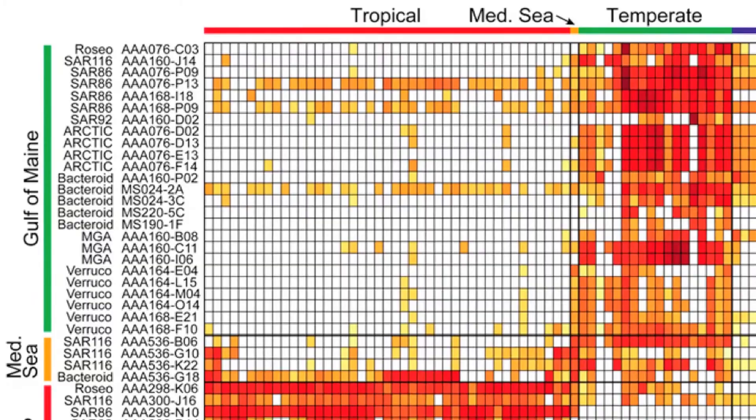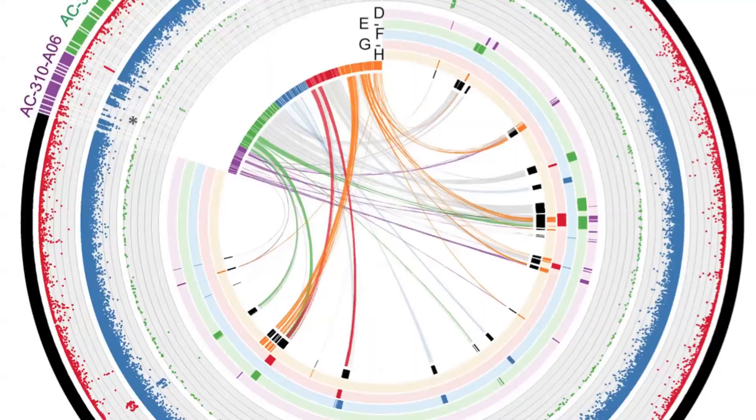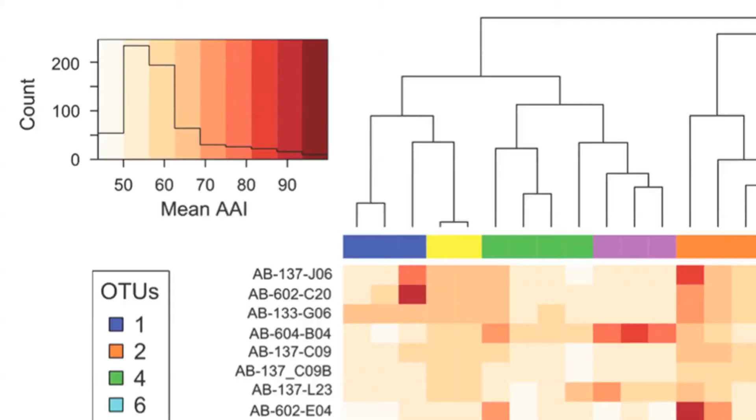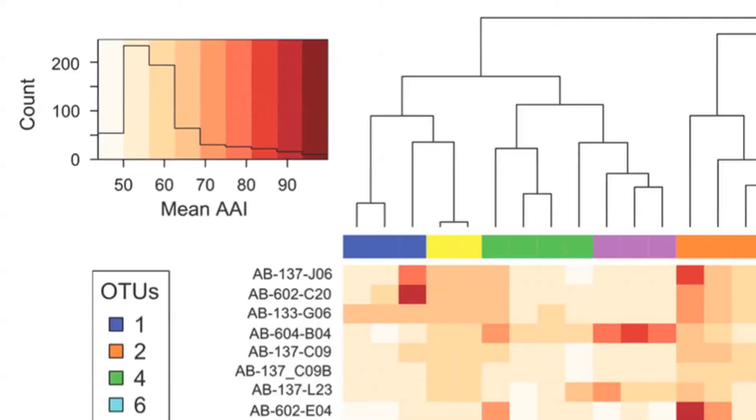Customers use the data that is produced by SCGC to answer a wide array of scientific questions. For example, this data can help understanding how oceans function and are affected by human activities, how life has evolved on earth, and how to produce new types of medicine and environment-friendly fuels.